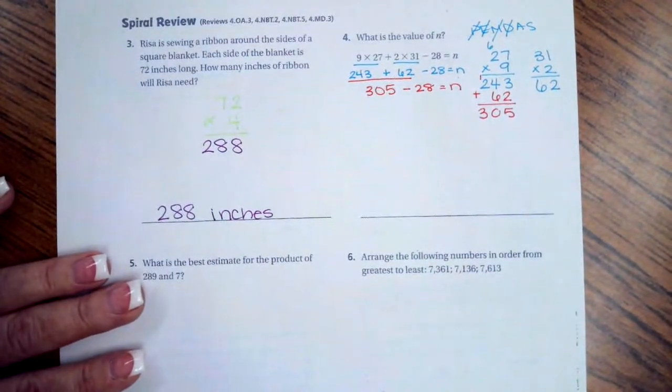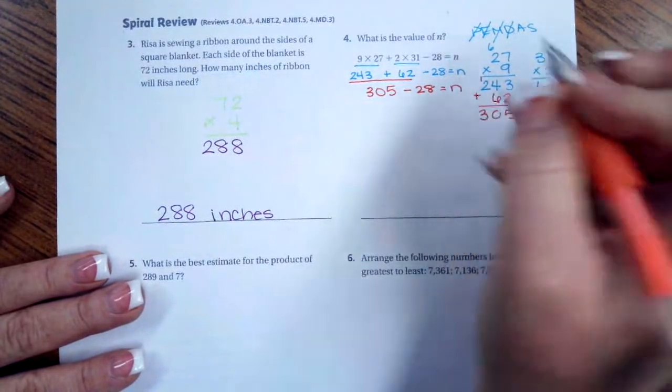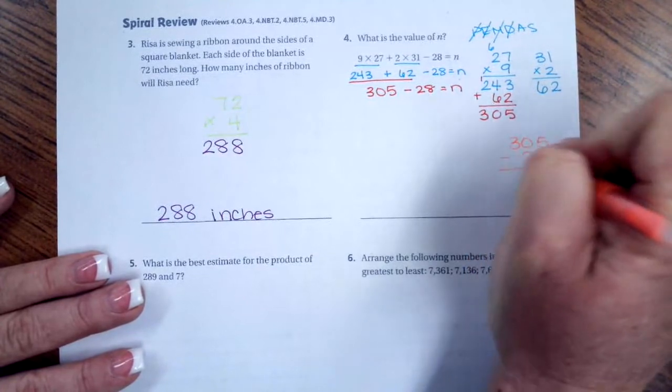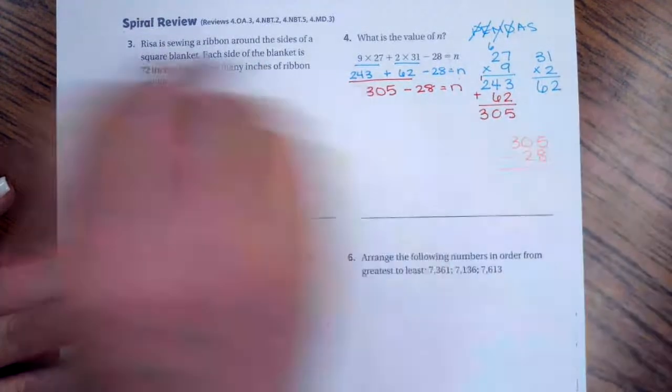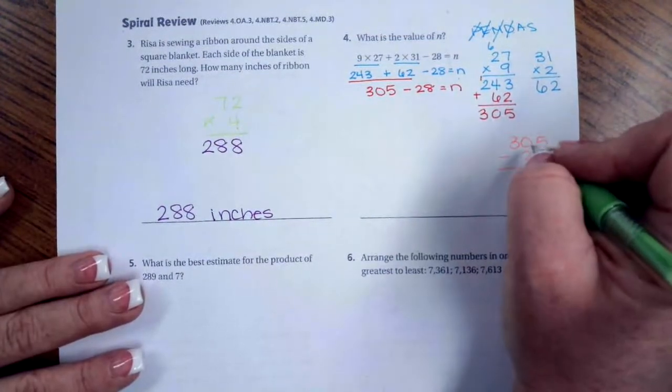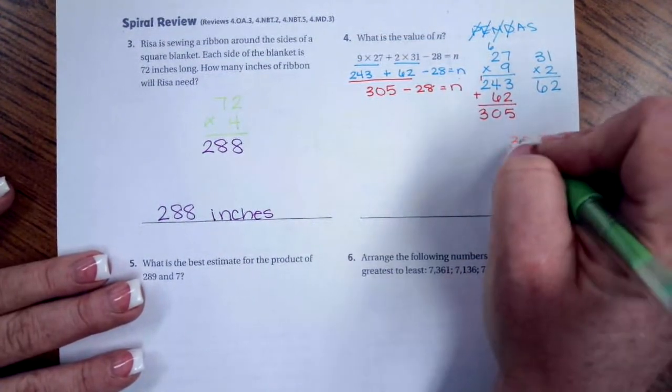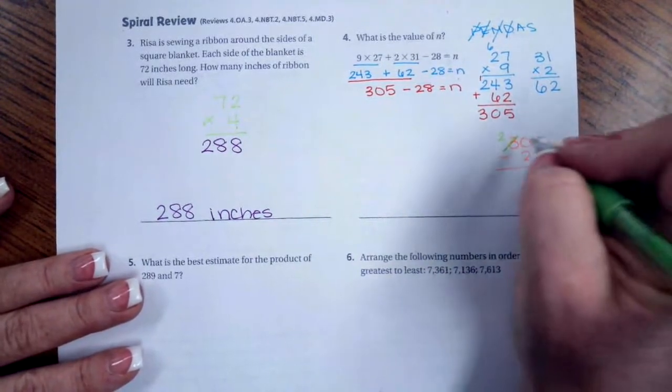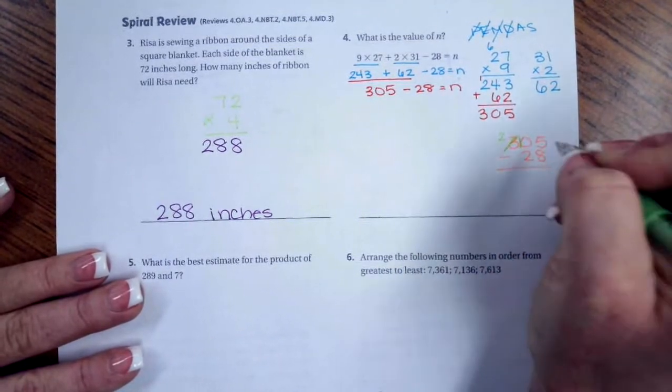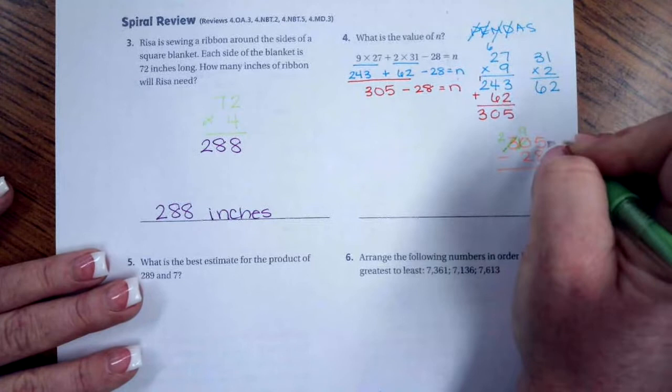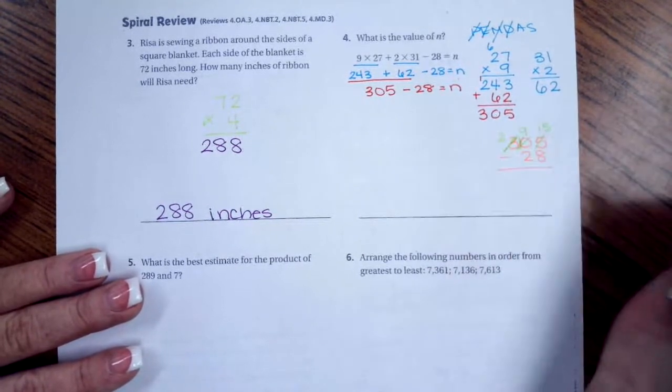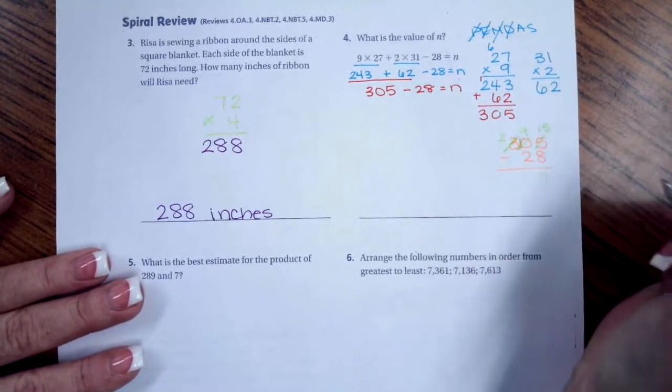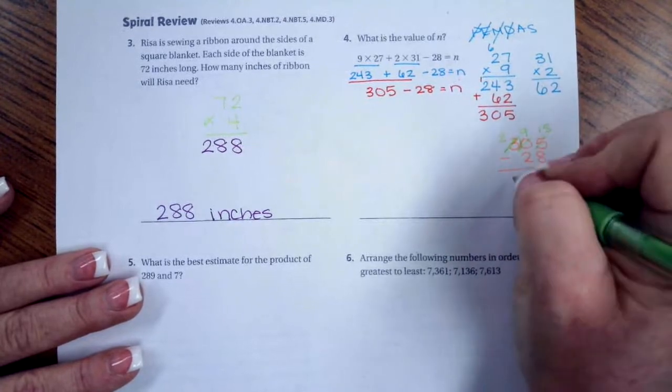So now I'm going to go ahead and go 305. Actually I'm going to rewrite that one. Because I'm going to have to borrow. So I'm going to do 305 minus 28. 5 cannot take away 8. And 0, I can't borrow anything from 0. So I have to go all the way over to the 3. Make it a 2. Then I'm going to make my 0 a 10. But then I have to borrow one, which makes it a 9. And make this one a 15.